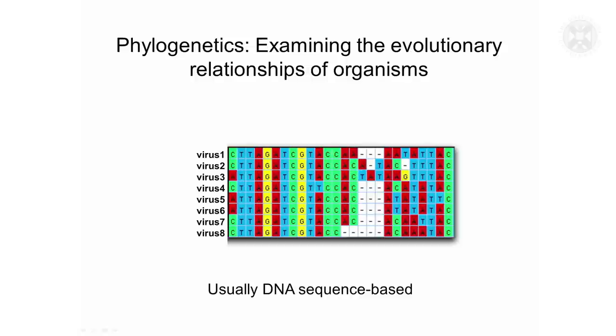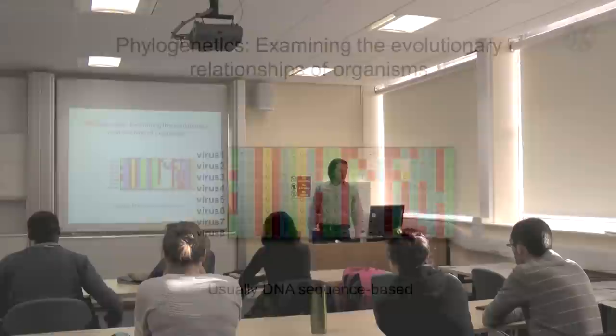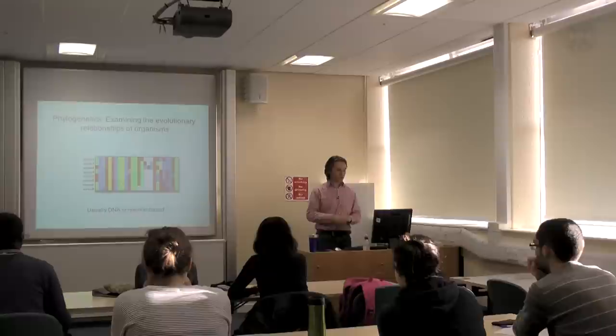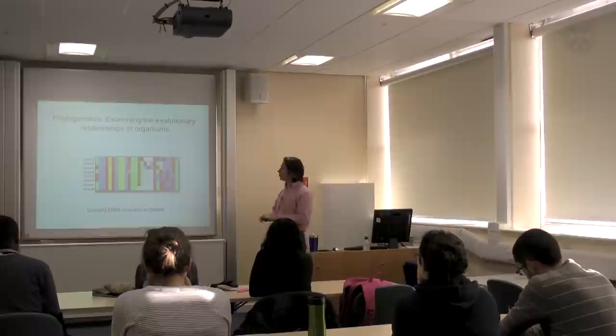Here we have a sequence alignment for genes which are found in a related set of viruses. We need to do the alignment because we need to identify what the sequence variation is between those different viruses in order to be able to estimate what the relatedness is for that group of viruses.